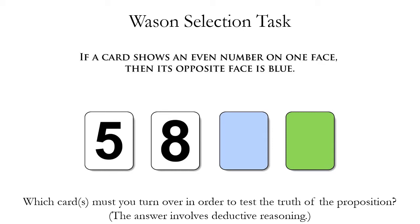This is just an example of the task — there are different versions, but they all have the same general structure. We're shown one side of four cards, and then we're told this proposition is true: if a card shows an even number on one face, then its opposite face is blue. Even though we're told that proposition is true, we want to test it to see if it actually is. The task is: which card or cards must you turn over in order to test the truth of that proposition?